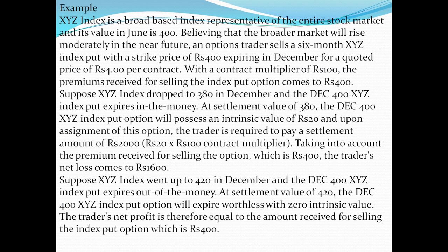Let's go ahead with the example. XYZ index is a broad-based index representative of the entire stock market, and its value in July is 400. Believing that the broader market will rise moderately in the near future, an option trader sells a six-month XYZ index put with a strike price of ₹400, expiring in December, for a quoted price of ₹4.0 per contract with a contract multiplier of ₹100. The premium received for selling the index put option comes to ₹400.